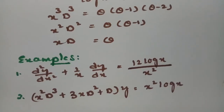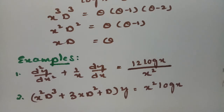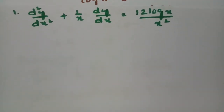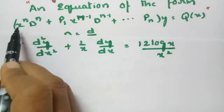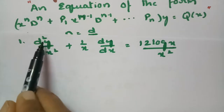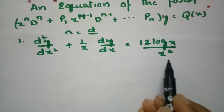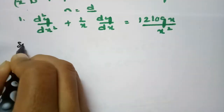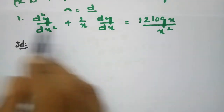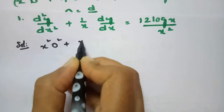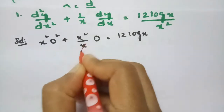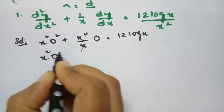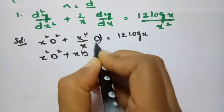Now let's look at the examples. The first question is: d²y/dx² + (1/x)dy/dx = 12log(x)/x². This is not of the form x^n * D^n, so we need to multiply through by x² to get x²D² + xD of y on the left side.